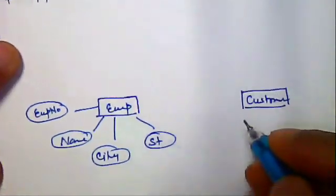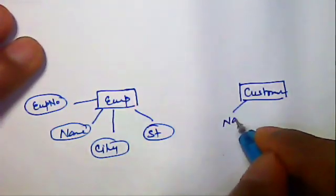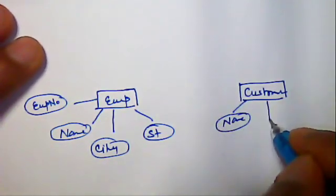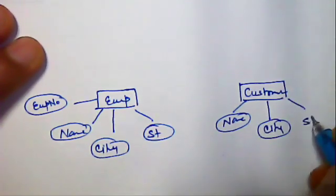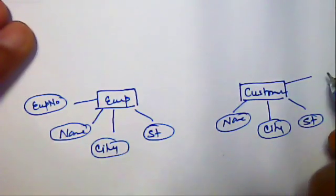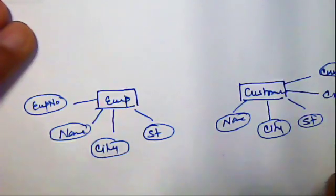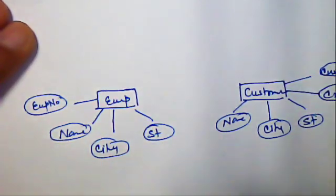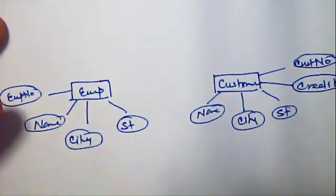Similarly, customer will also have some attribute that is name, city, street, customer number, and credit. So these are the attributes of employee and customer.